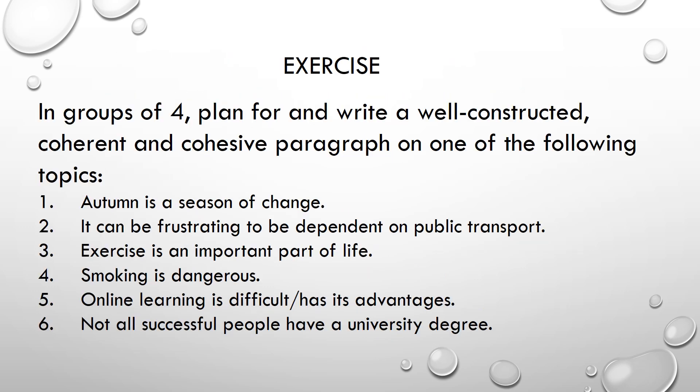This is an exercise for you. In groups of four or in pairs, whatever works, plan for and write a well-constructed, coherent and cohesive paragraph on one of the following topics: Autumn is a season of change. It can be frustrating to be dependent on public transport. Exercise is an important part of life. Smoking is dangerous. Online learning is difficult or has its advantages — you could write two paragraphs here. And the last: not all successful people have a university degree.